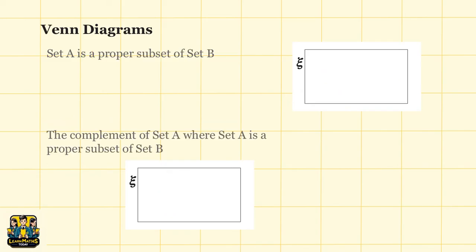Now, how do we draw a Venn diagram such that set A is a proper subset of set B? Remember the definition of a proper subset? A proper subset occurs when every element of set A is also an element of set B, but the two sets are not equal.